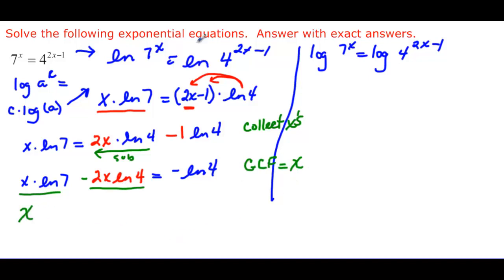So I can factor that out. I have an x, and what do I have left over? Well, in here I'm going to have, here's my common factor. So what's left is ln 7. And then here is my common factor of x. So what's left is minus 2 ln 4. And then on the other side we still have minus ln 4.